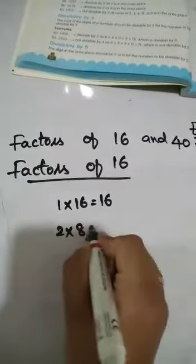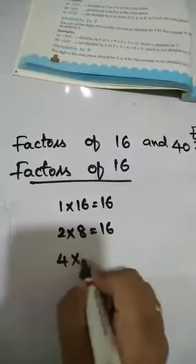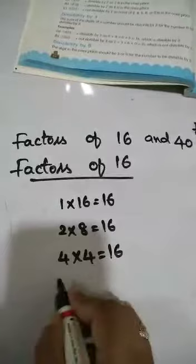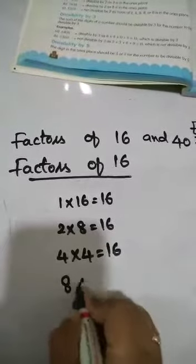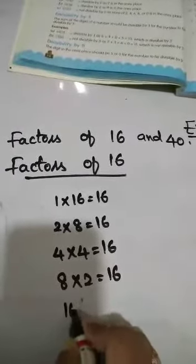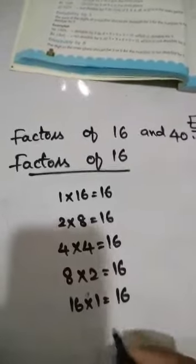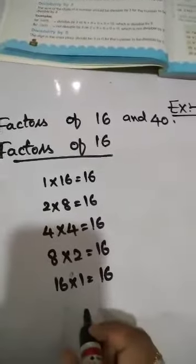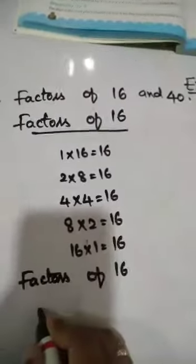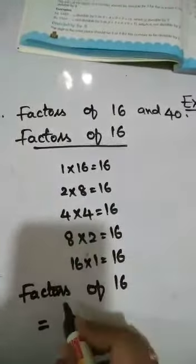2 into 8 equals 16. Next, 4 into 4 equals 16. 8 into 2 equals 16. 16 into 1 equals 16. So the factors of 16 are: 1, 2, 4, 8, 16.